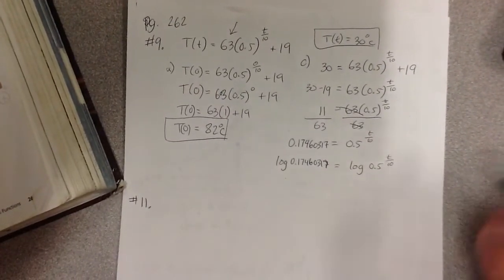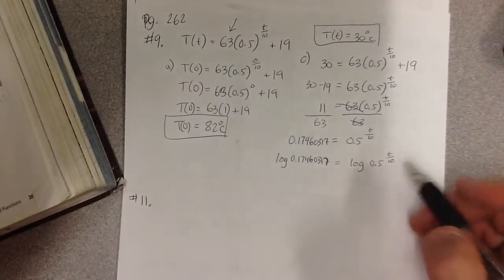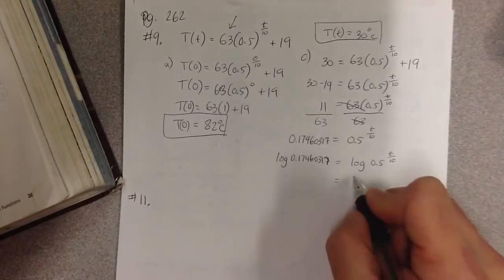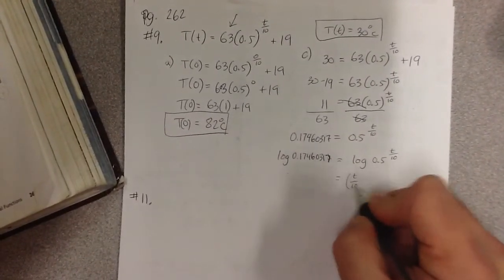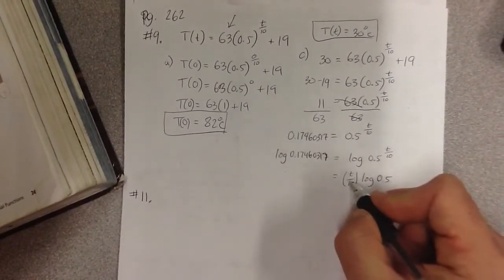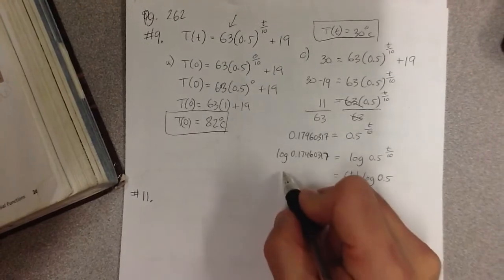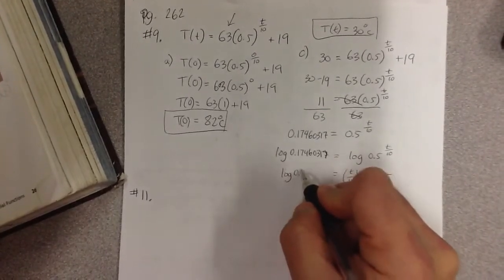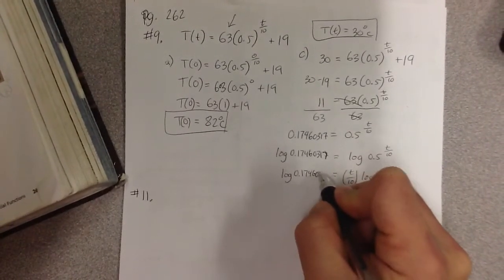Now what logs do, logs allow us to rewrite this. I can now rewrite this as t over 10 is equal to log of 0.5, because you're allowed to rewrite the exponent right out in front. And on this side, I still have log of 0.17460317.